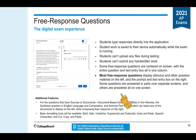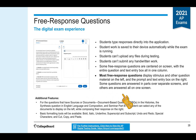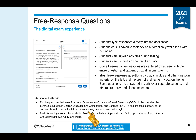For free response questions in the digital exam, you will type your responses directly into the application. Your work is saved to your device automatically while the exam is running. You will not be uploading any files or submitting any handwritten work. Some free response questions are centered on screen; most display stimulus material on the left and the prompt and text entry box on the right. Some questions are answered in parts over separate screens, others on one screen. For questions with sources or documents — like DBQs in history, the synthesis question in English Language and Composition, and Seminar Part B — students can select any document to display on the left while composing their response on the right. Basic formatting tools are available: bold, italics, underline, superscript, subscript, undo and redo, special characters, and cut, copy, and paste.